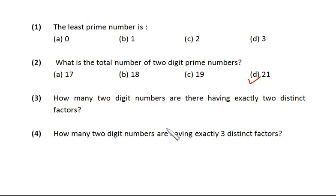How many two-digit numbers are there having two distinct factors? This is the definition of prime numbers, so we are asked indirectly in this question about the number of prime numbers. How many two-digit prime numbers do we have? We have 21 prime numbers which are two digits. The answer is quite simple—both questions 2 and 3 are the same, but the way of asking is a bit different.